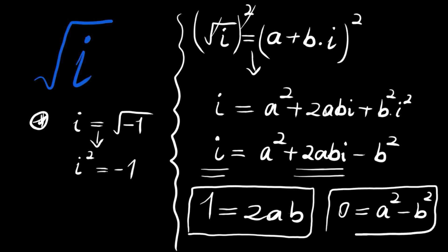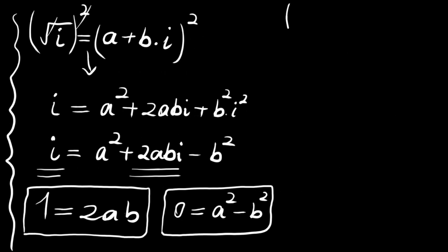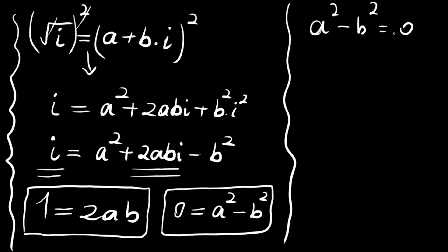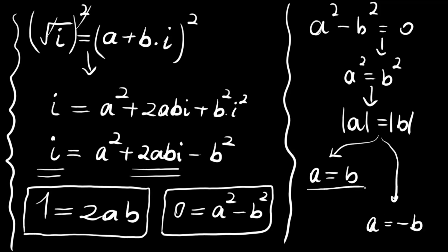On the left hand side we have zero for the constant, and on the right hand side we have a squared minus b squared, so a squared minus b squared equals zero. We now have a system to solve. From this equation, a squared equals b squared, meaning the absolute value of a equals the absolute value of b.